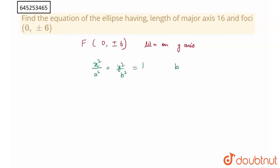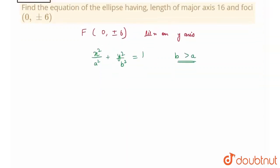For such an ellipse, the length of the major axis would be equal to 2b. And we have this length to be equal to 16. Therefore I can say 2b = 16, or b = 8.